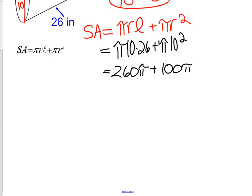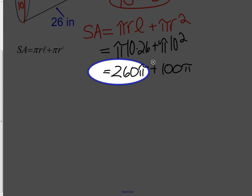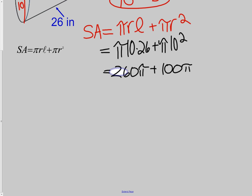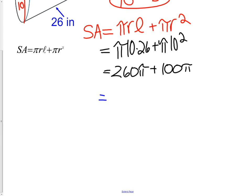If we were looking for lateral area, we would be done. The 260 pi is our lateral area. But if we want surface area, we need to add these together.